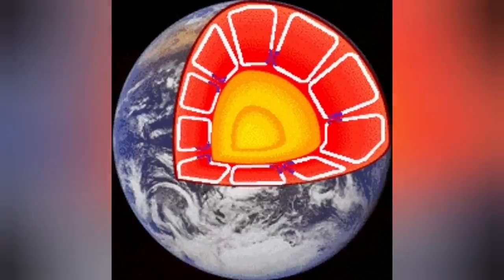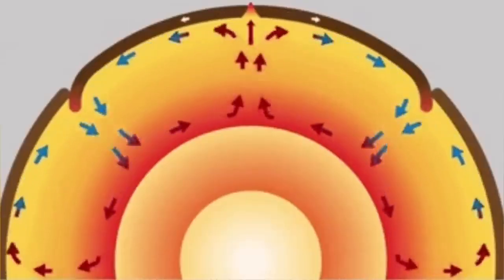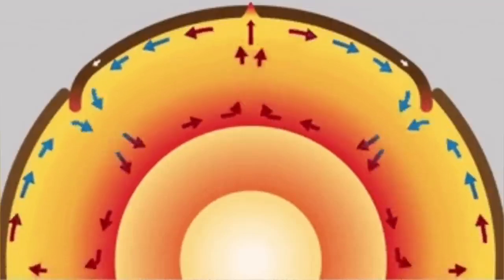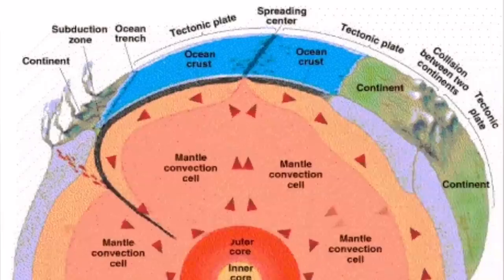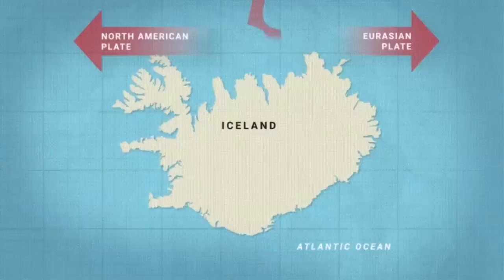This heat creates convection cells through the mantle of the Earth which rise to the surface and crack the hardened solidified crust, the lithosphere. Through these cracks, magma can erupt.